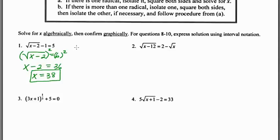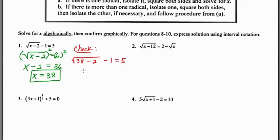The answer is 38, but it's really encouraged that you check to make sure it works — sometimes in this section answers don't work. Plugging in 38: √(38−2) − 1 = √36 − 1 = 6 − 1 = 5. Sure enough, 5 = 5, and our answer checks.